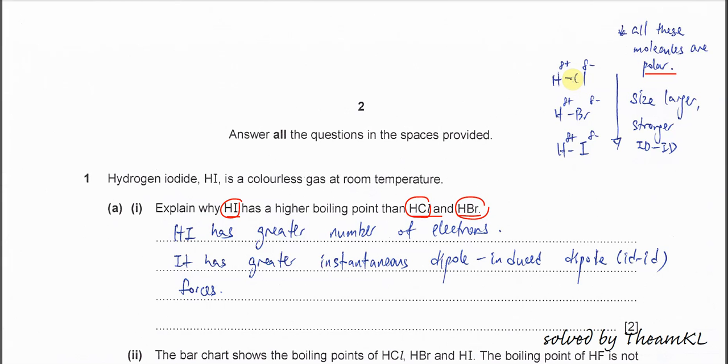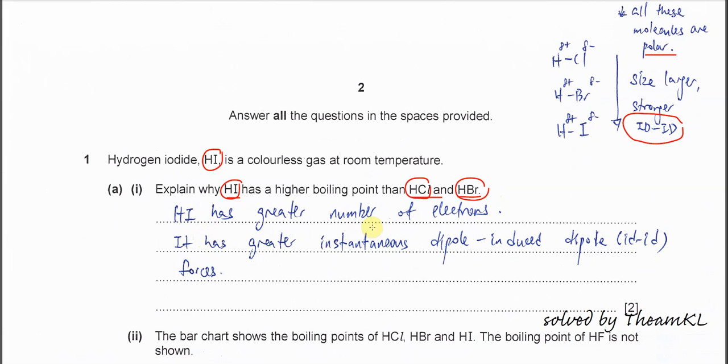If it's just about polarity, HCl is supposed to have a higher boiling point, but HI now has a higher boiling point than the other two. So the main contributor for this higher boiling point is not about polarity, it's about size. When down the group, the size of the halogens increases and therefore it has more electrons and the instantaneous dipole-induced dipole IDID is going to be stronger.